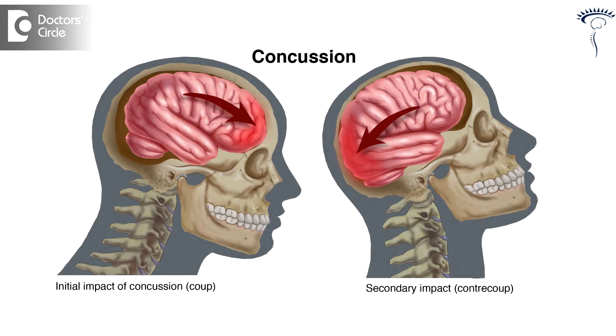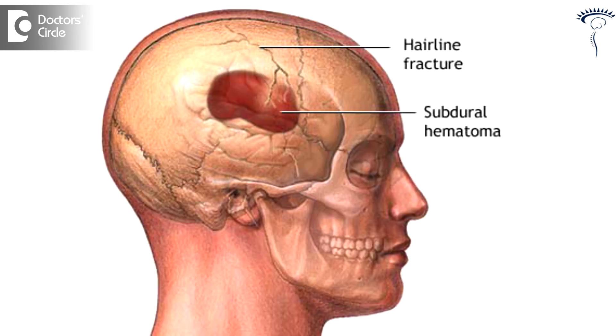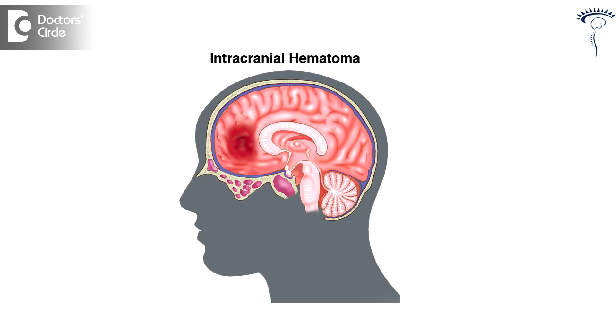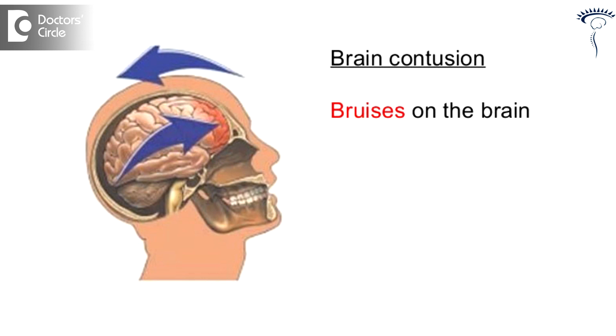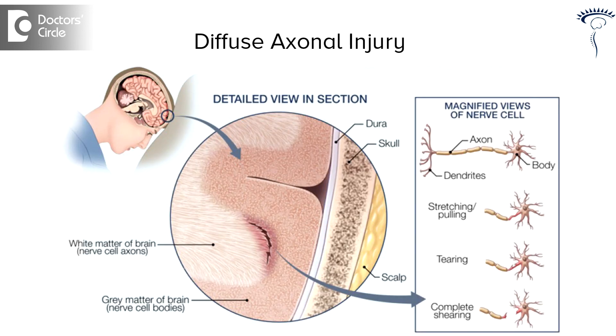Depending upon the structures which are involved, we can classify head injury into five groups. Number one is cerebral concussion. Number two is skull fracture. Number three is intracranial hematomas. Number four is cerebral contusion. Number five is diffuse axonal injury.